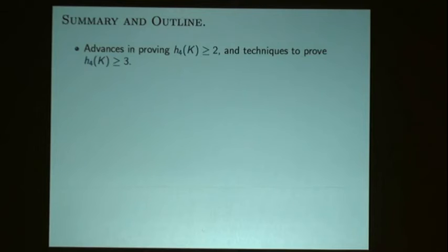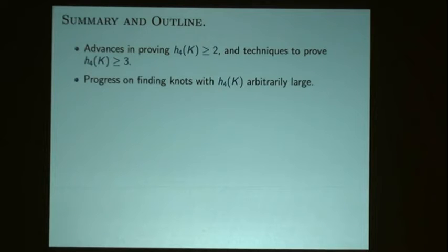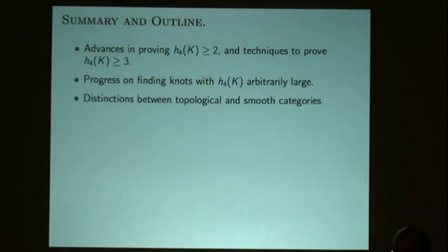Let me give a summary of the results and an outline of the talk. We'll mention new results advancing the proof that the non-orientable four-genus is greater than or equal to two — new ways to prove that knots don't bound Möbius bands. Also, techniques to show that knots don't bound Klein bottles. We'll have some progress, not quite complete, on proving that the non-orientable four-genus can go to infinity.